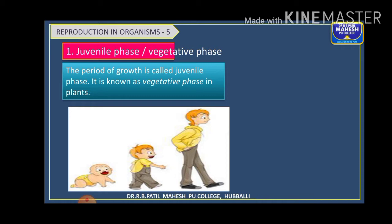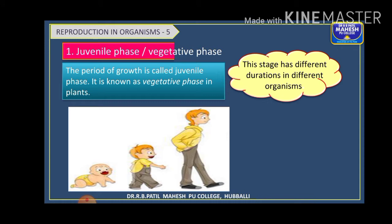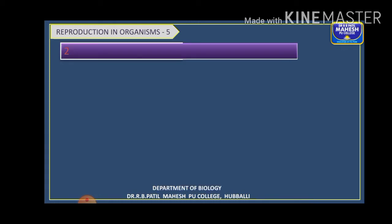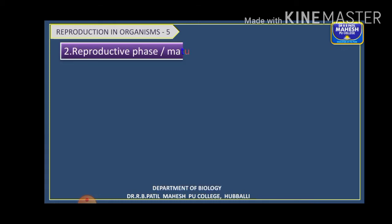This initial period — also called the pre-reproductive phase — is the period from birth up to reproductive maturity. This stage differs in different organisms; it is not the same or common in all organisms. It varies.